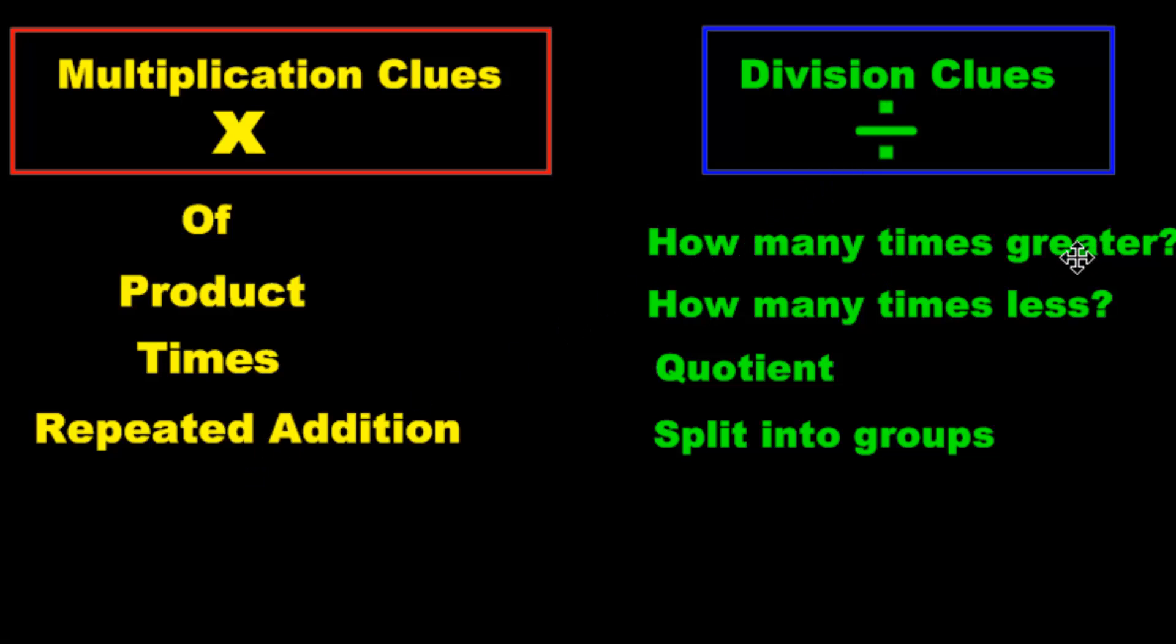If the word problem is common sense to be involving repeated addition where the same number is added over and over again, you've got multiplication. Now how about division? How many times greater? Look, an ER word. Okay yes, but the key here is how many times. How many times greater or how many times less. The key here isn't the word greater but how many times. If you see that, you divide the numbers. Quotient and splitting into equal groups. Remember these, memorize them, because I'm going to be quizzing you right away.